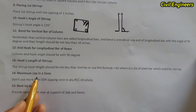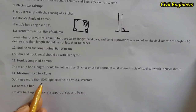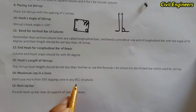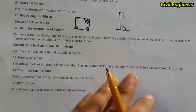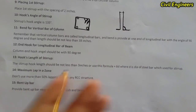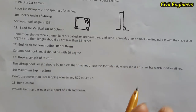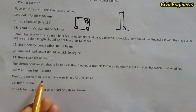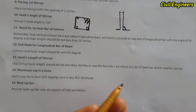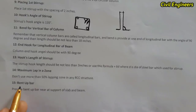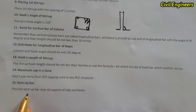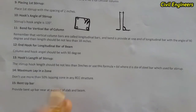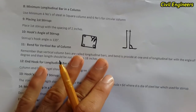The fourteenth term is maximum lap in a zone: do not use more than 50% lapping in any zone of an RCC structure — whether a slab, beam, or column — as it will cause many problems. The fifteenth and final term is bent-off bars: provide bent-off bars near the support of slabs and beams.